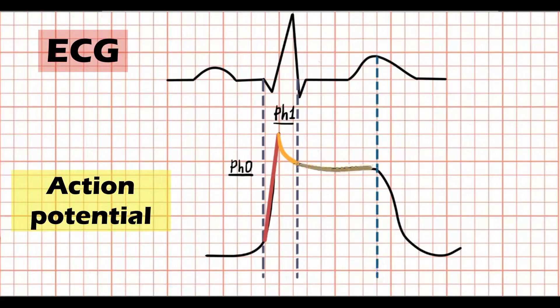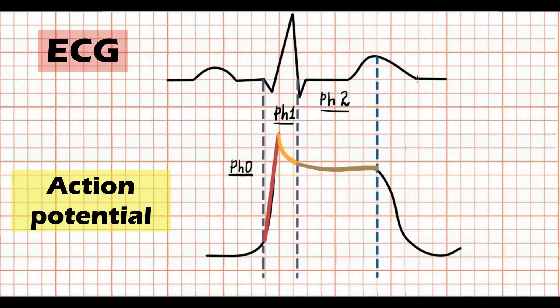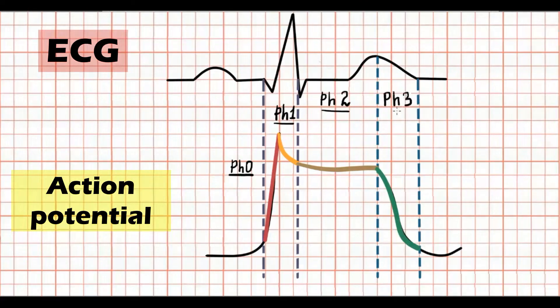The interval between the S wave and the peak of T wave corresponds to the plateau phase, or phase 2. And from the peak of T wave to the end of T wave corresponds to the final repolarization phase, phase 3.